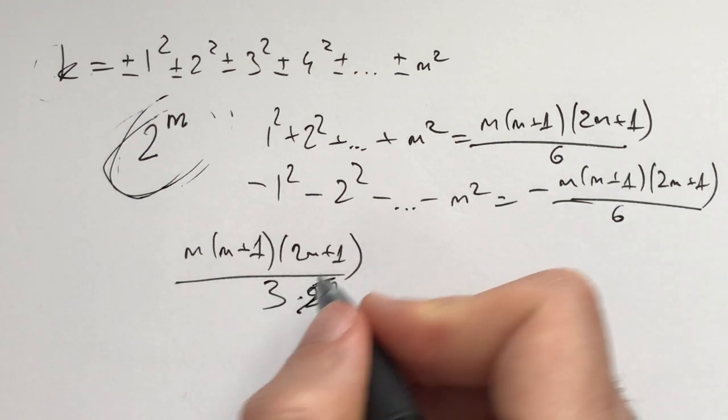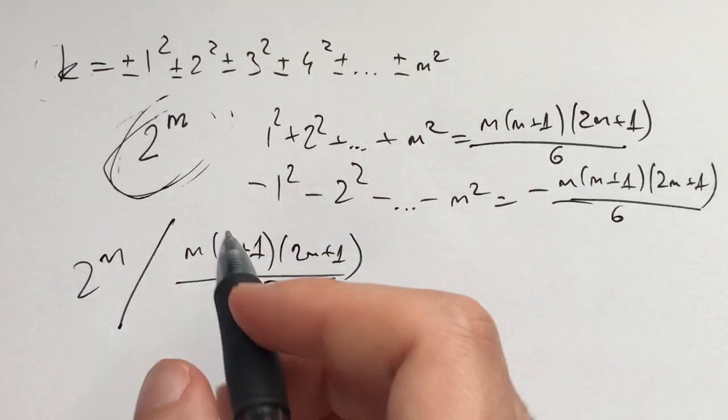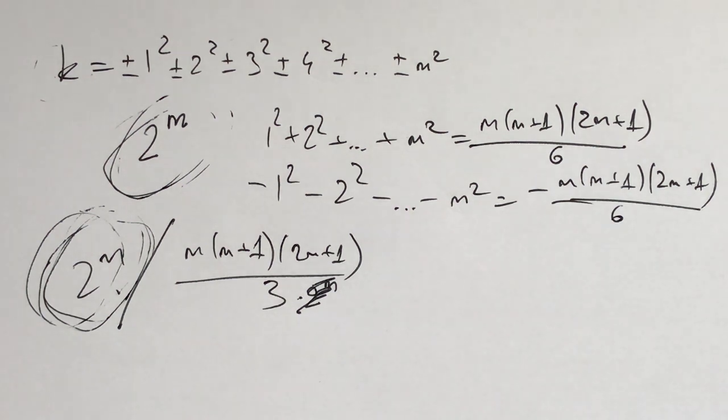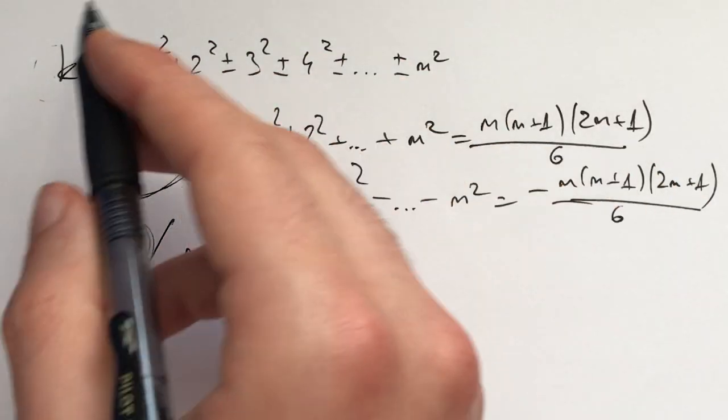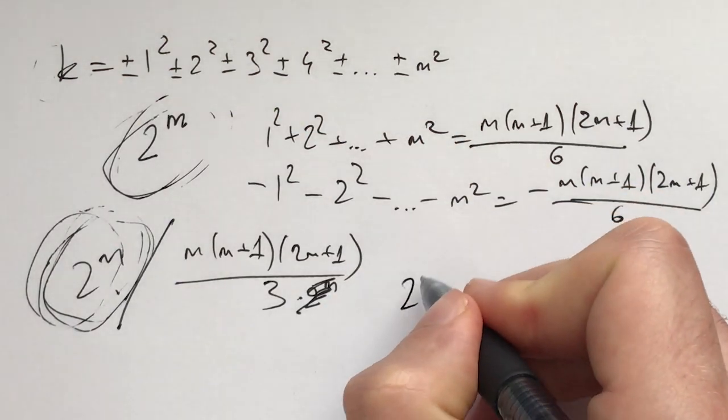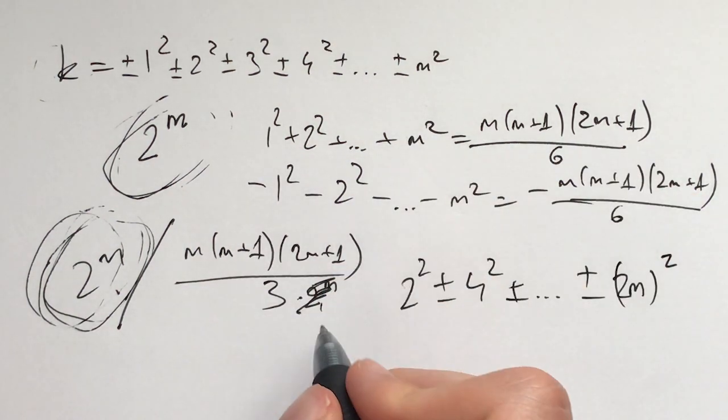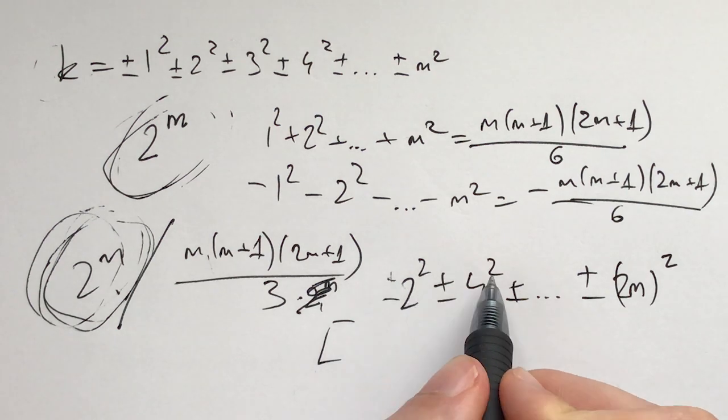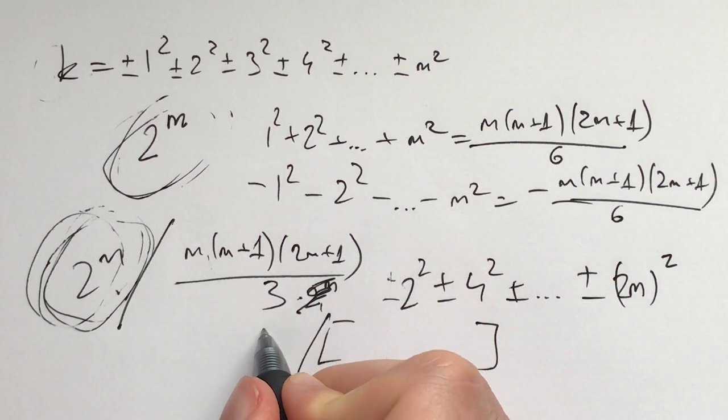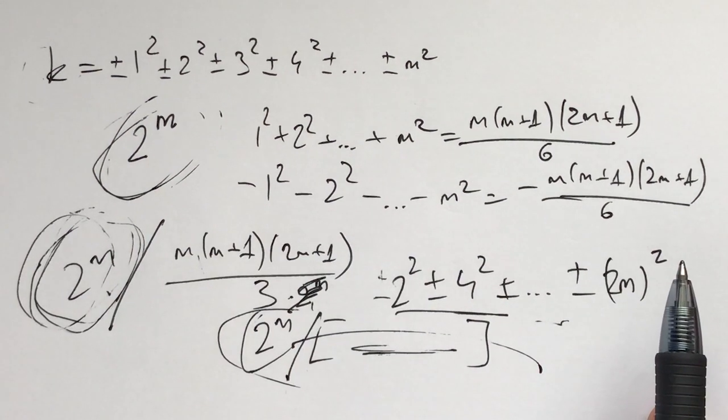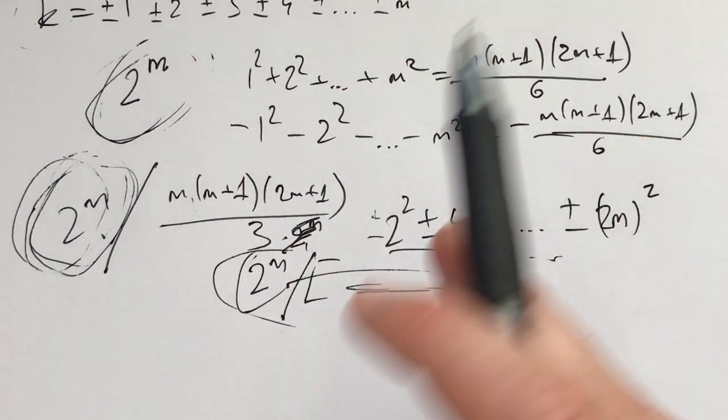So every number is represented roughly 2^m divided by this, which seems to be telling us that every number will be represented a lot. So you might be thinking of some sort of density argument here. However, to show yourself that you are wrong in thinking about this, think about the numbers if instead the problem was ±2² ± 4² ± ... ± (2m)². Then again the sum is a polynomial in m and the number of possibilities is a power of m. This will again have a similar density, but we will not be able to get any odd numbers. So that's one idea and the reasoning for why it's not the best idea to start off with.